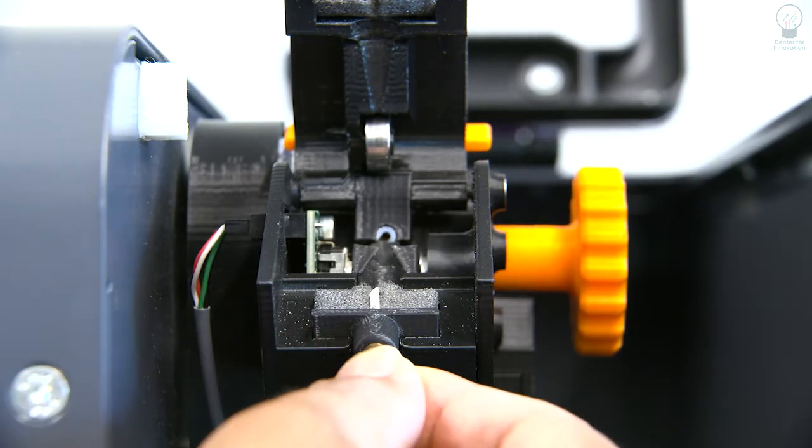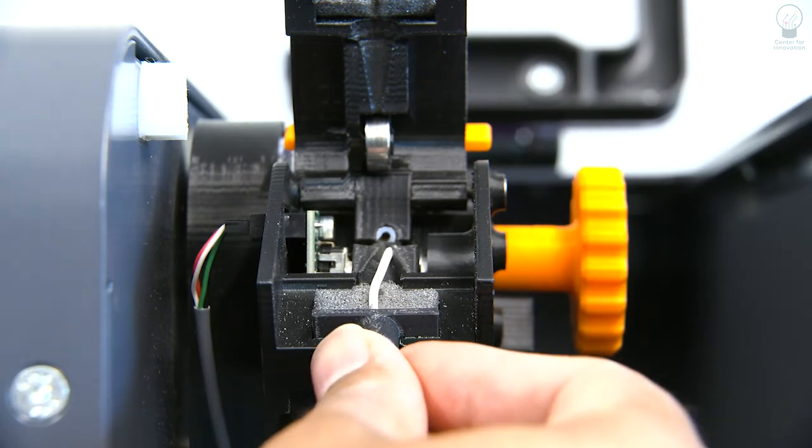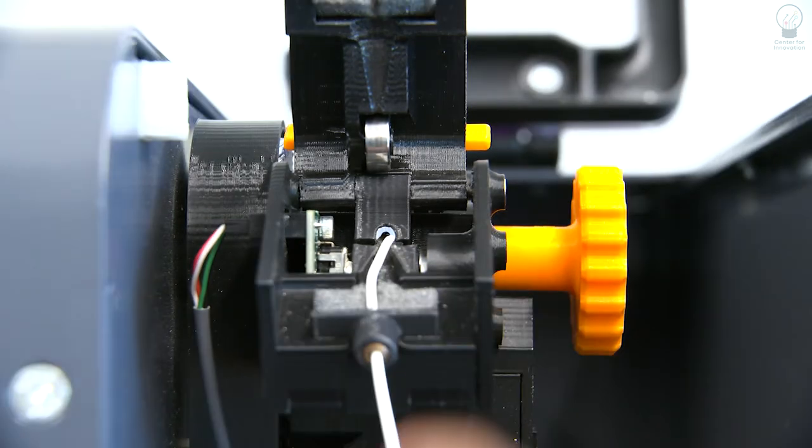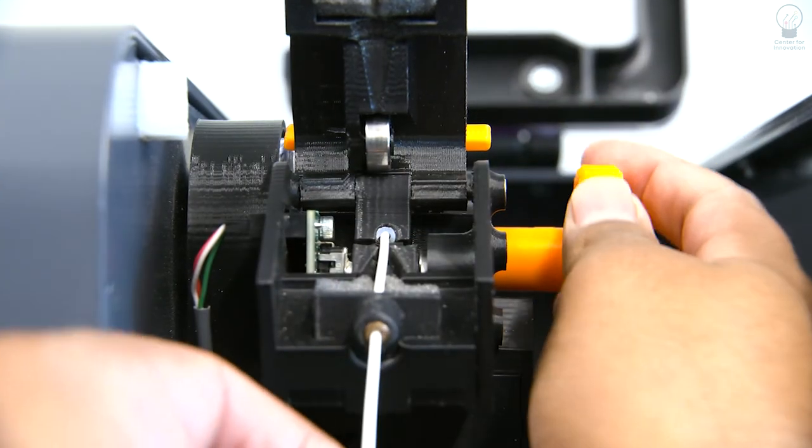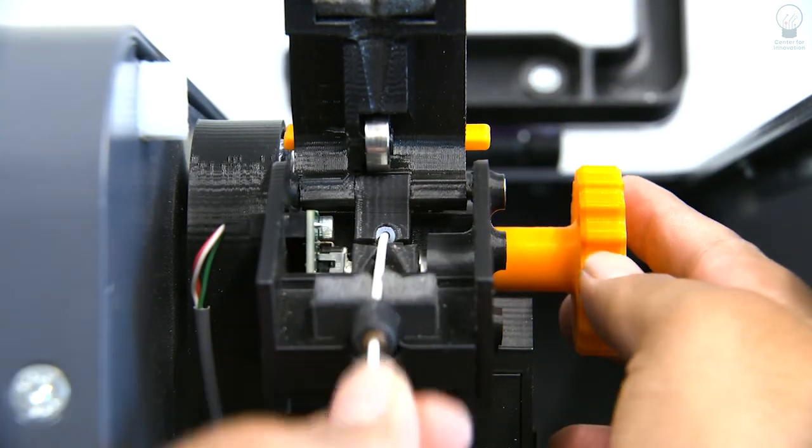Then push the filament through the hole at the top of the space. Put the tip of the filament into the second hole and use the knob to push about an inch or two more of the filament through the machine.